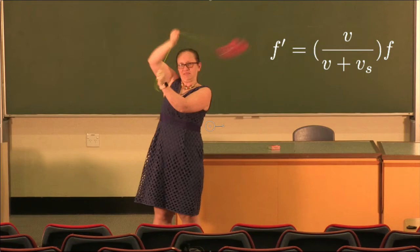So the equation to describe the observed frequency is given by V, the velocity of sound, divided by V plus Vs in this case, the plus sign because the source is moving away from the observer. So in this case, we end up with a smaller frequency and so you hear a deeper sound.